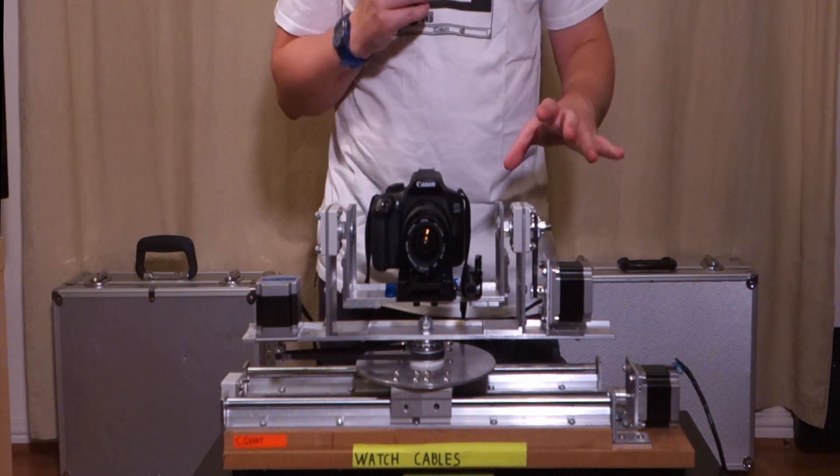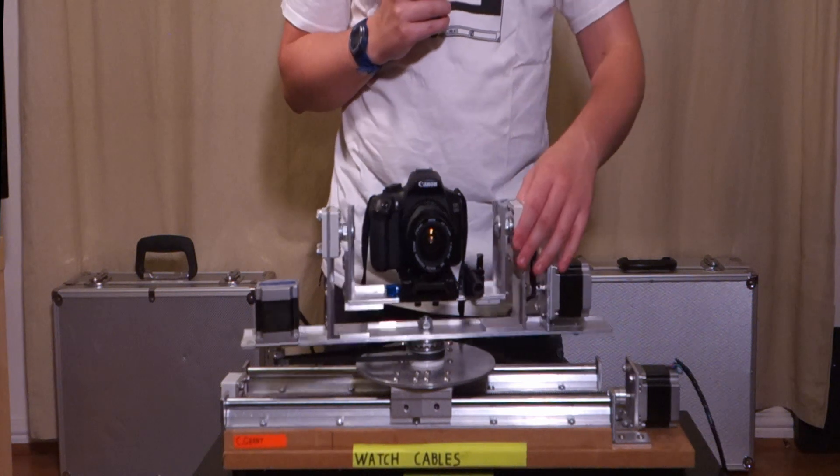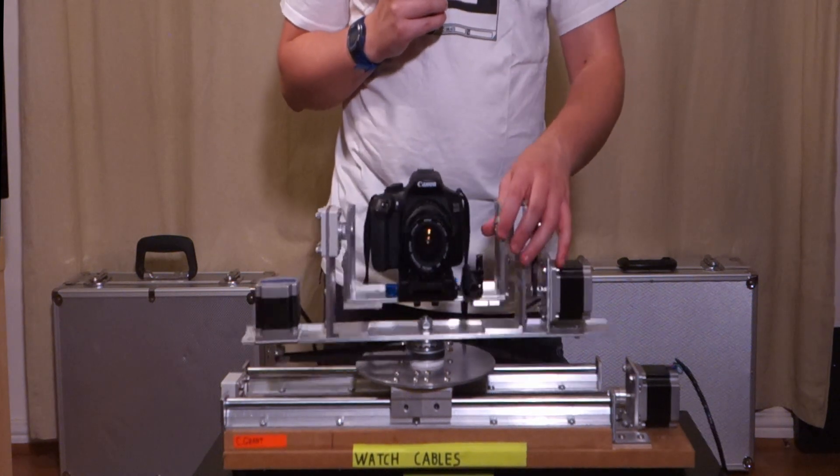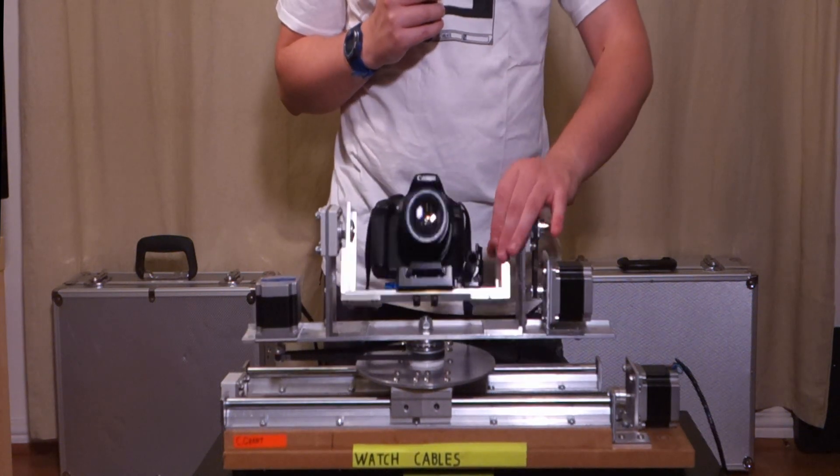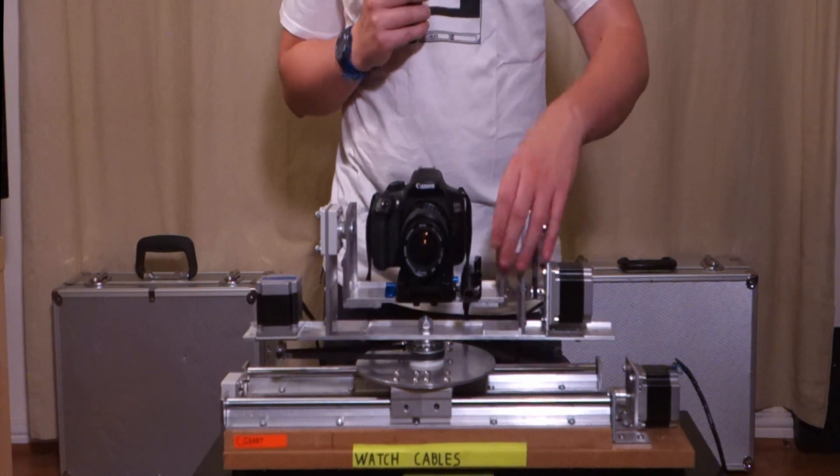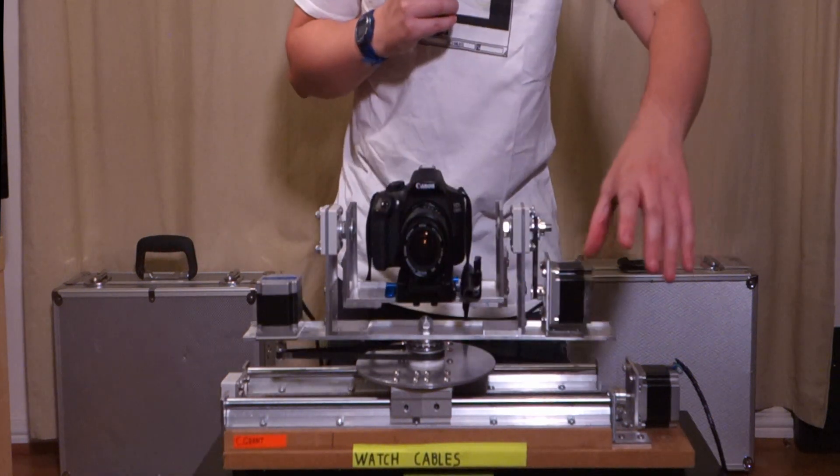So currently it can do three axes which is a pan which is this movement, a tilt which is when the camera goes up and down, and a track which is when the camera travels along the rails on here.